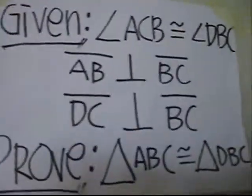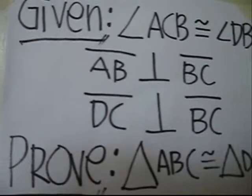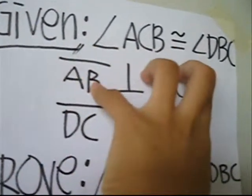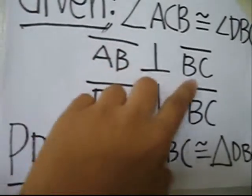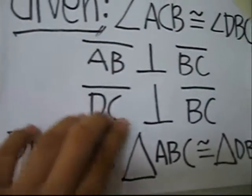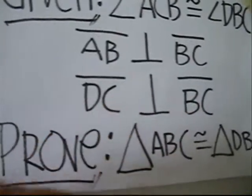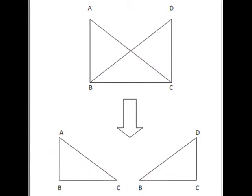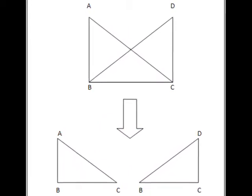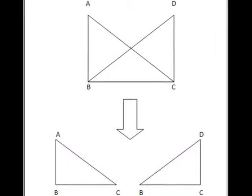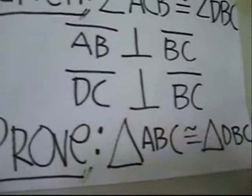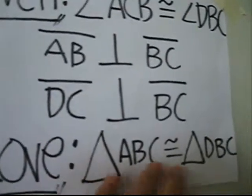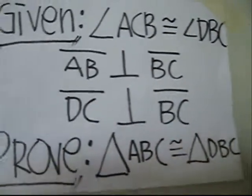This is another example. The given: angle ACB is congruent to angle DBC, line AB is perpendicular to line BC, and line DC is perpendicular to line BC. Let us refer to these figures. Prove that triangle ABC is congruent to triangle DBC.